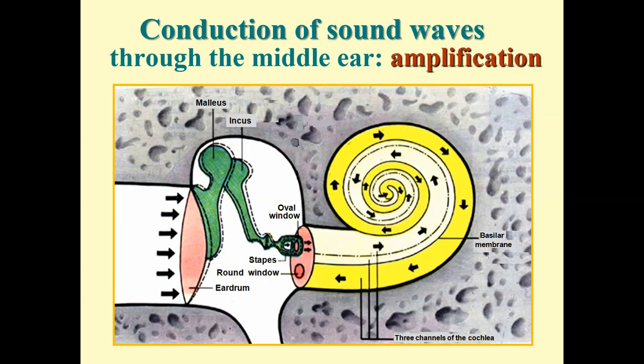The first mechanism of amplification comes from comparing the size of the eardrum versus the stapes footplate. The stapes footplate surface area is approximately 15 to 20 times smaller than the eardrum. If the same pressure is conducted to a much smaller area, the pressure per unit area increases proportionally — at least 15 to 20 times. Additionally, the ossicles are connected by a lever system, which further increases the force of vibration by about 1.3 times (30%).